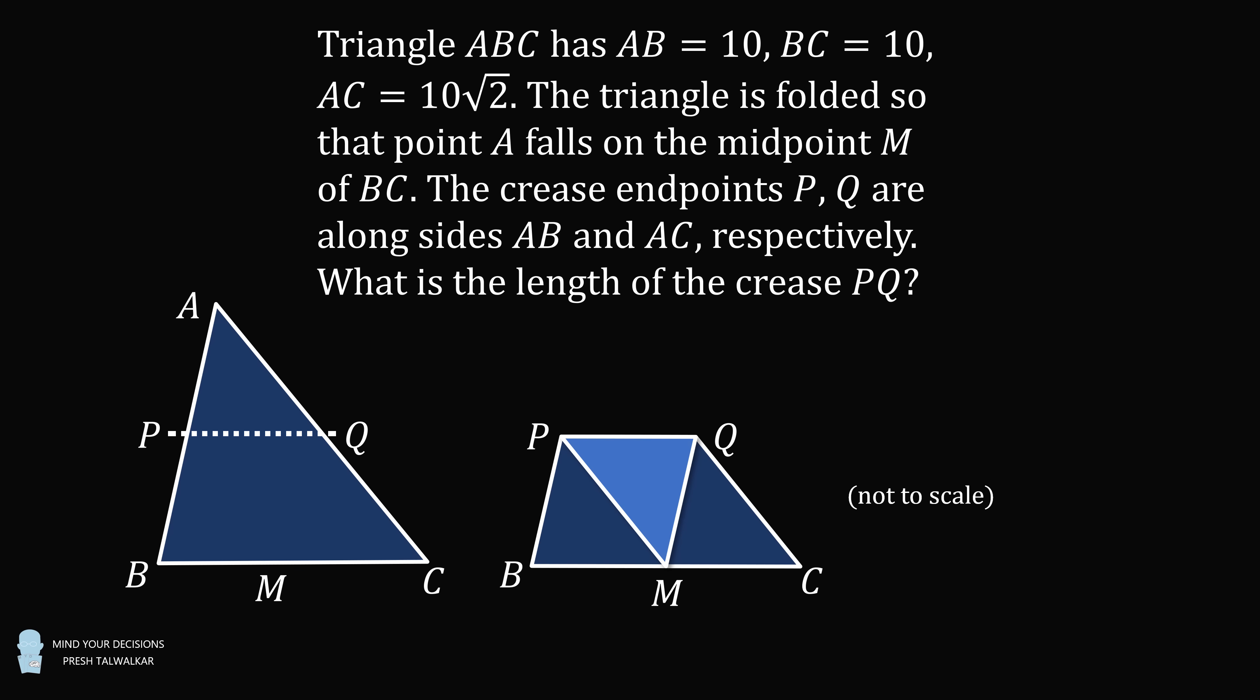Triangle ABC has AB equal to 10, BC equal to 10, AC equal to 10 root 2. The triangle is folded so that point A falls on the midpoint M of BC. The crease endpoints P, Q are alongside AB and AC respectively. What is the length of the crease PQ?